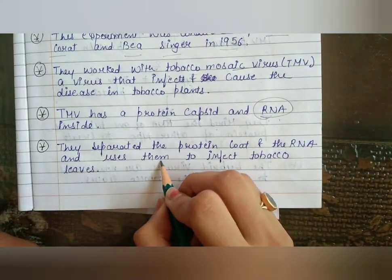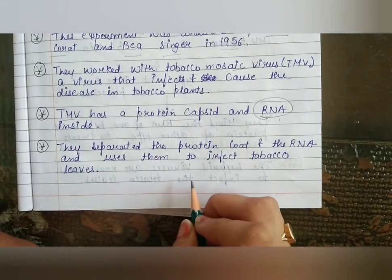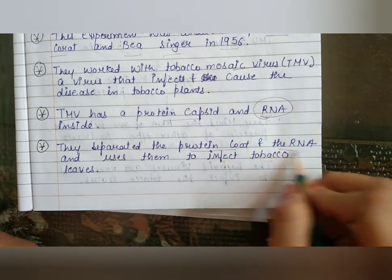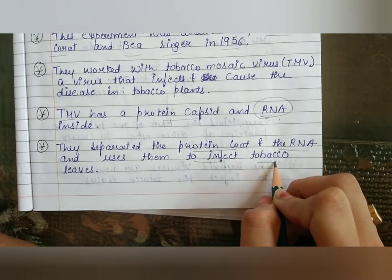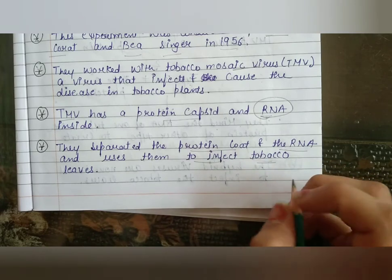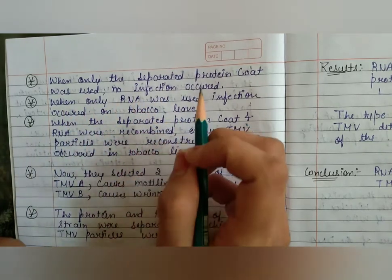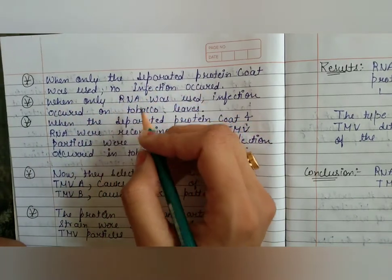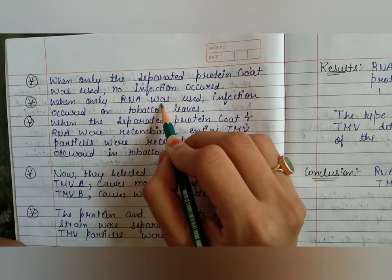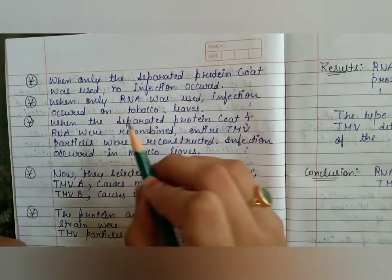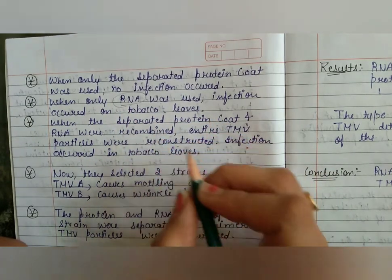They separated the protein coat and the RNA and used them to infect tobacco leaves. Unhone virus ka protein coat aur uska RNA dono ko separate kiya. When only the separated protein coat was used, no infection occurred. When only RNA was used, infection occurred on tobacco leaves.